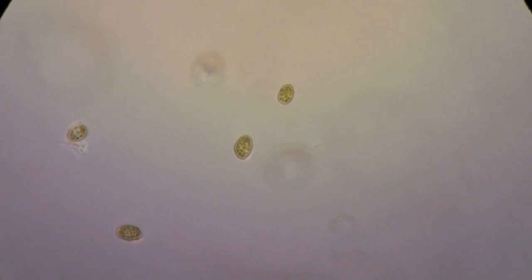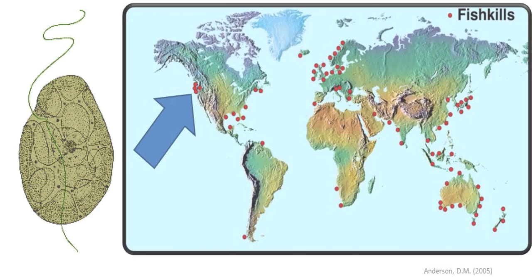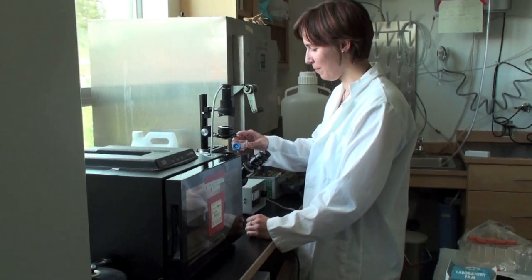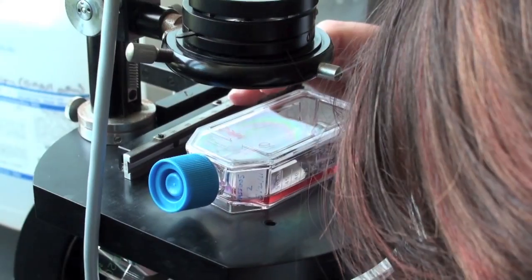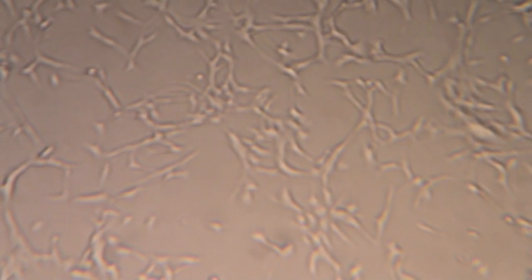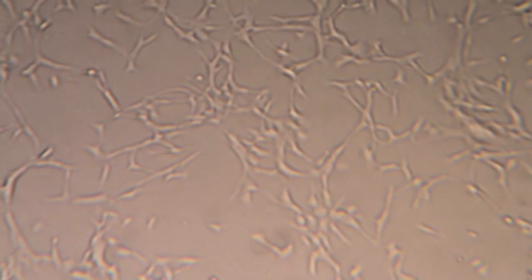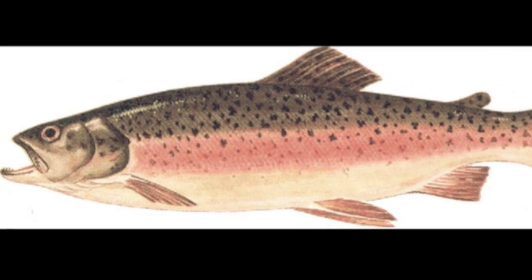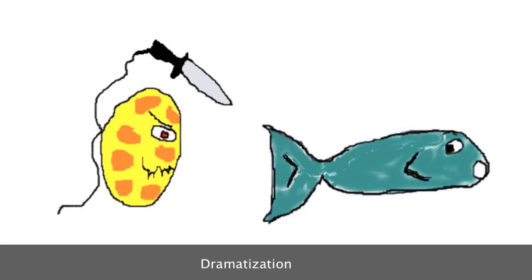Heterosigma is a harmful algal species responsible for millions of fish deaths around the world. Emily Olson of NOAA's Northwest Fisheries Science Center is developing a test using gill cells extracted from rainbow trout to determine whether Heterosigma is toxic or not.